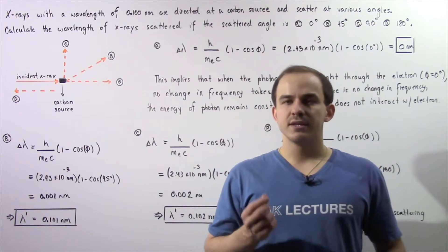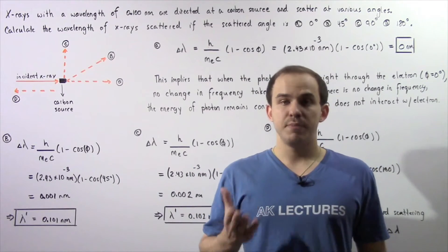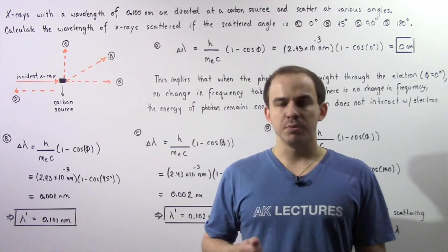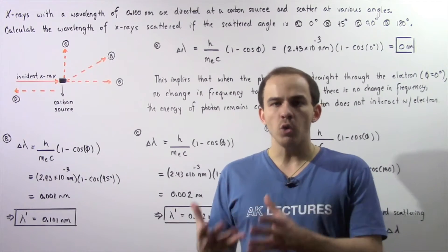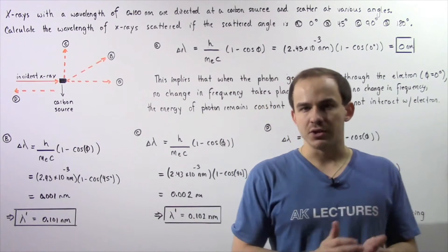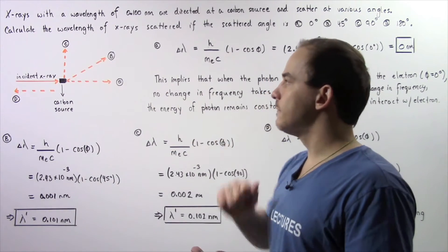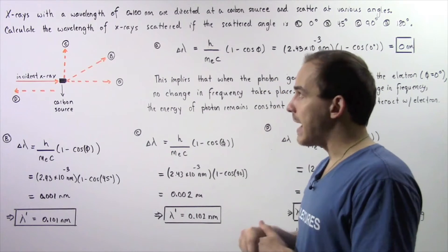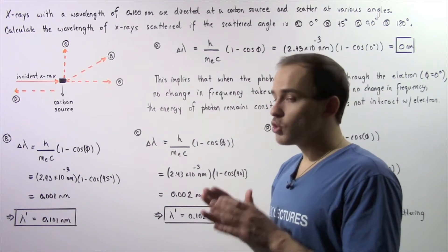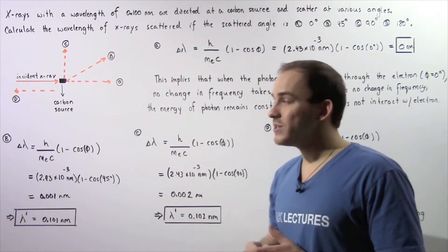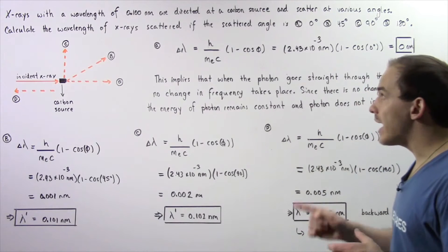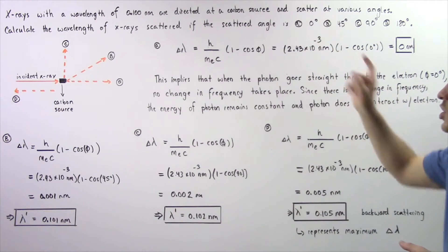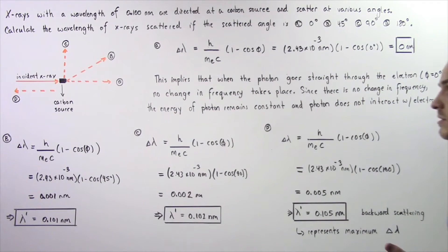In the previous lecture we discussed the Compton Effect, which is basically an increase in wavelength that takes place as a result of the collision between photons and electrons. So let's look at the following example that is a direct application of the Compton Effect. X-rays with a wavelength of 0.100 nanometers are directed at a carbon source that contains electrons, and those x-rays scatter at various angles.